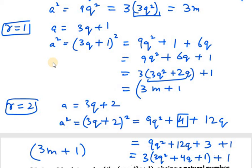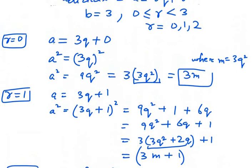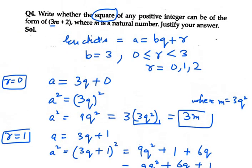Now you can see that it can take 3 values: 3m, 3m plus 1, and 3m plus 1. It was asked about 3m plus 2 but it is not equal to 3m plus 2. Therefore, you can say that the square of any positive integer can never take a form of 3m plus 2. That's your answer.